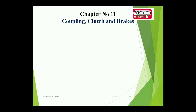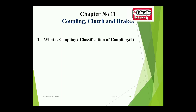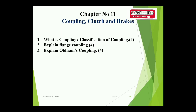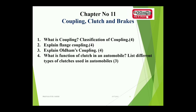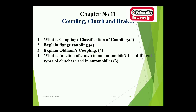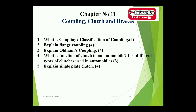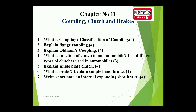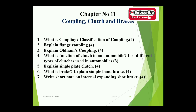Chapter eleven covers coupling, clutch, and brake. Topics: what is coupling? Classification of couplings, 4 marks. Explain flange coupling. Explain Oldham's coupling with neat sketches. What is the function of the clutch in an automobile? List different types of clutches used in automobiles, 3 to 4 marks. Explain single plate clutch system, 4 marks. What is a brake? Explain simple band brake, 4 marks. Write a short note on internal expanding shoe brake, 4 marks. Sometimes two questions are combined into a 7 marks theory.